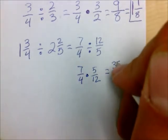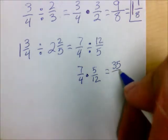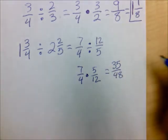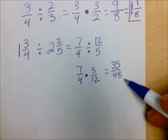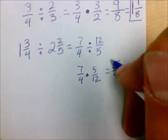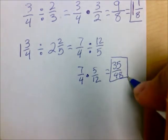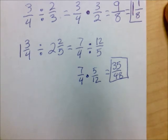seven times five is thirty-five, four times twelve is forty-eight. See if I can simplify, thirty-five and forty-eight, I cannot. So it stays as an answer of thirty-five forty-eighths.